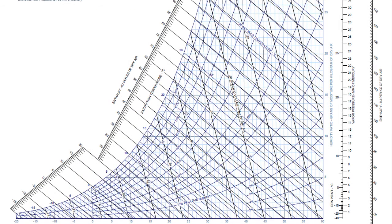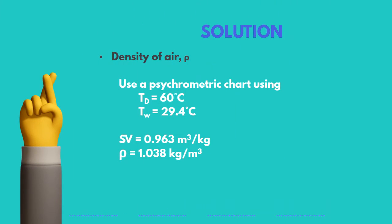We first find the point of intersection of the given dry bulb and wet bulb temperatures, which are 60 and 29.4 degrees Celsius respectively. Then we create a line from this point parallel to the nearest line of specific volume. Since the red line is in between the values of 0.96 and 0.98, we estimate the specific volume for air. Now that we have the specific volume of air, we can solve for its density by reciprocating the estimated value and get 1.038 kilograms per cubic meter.